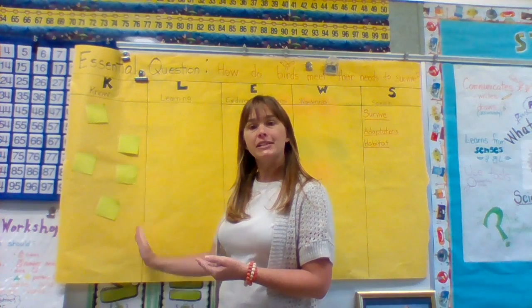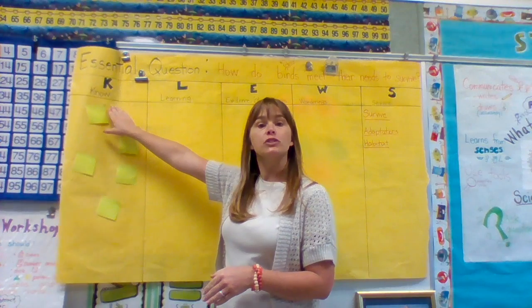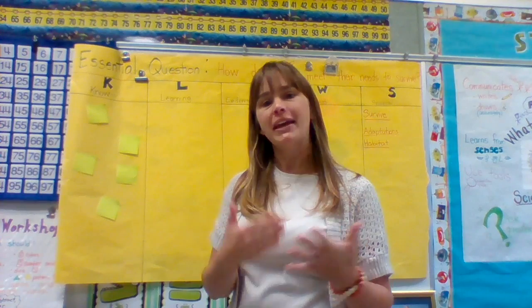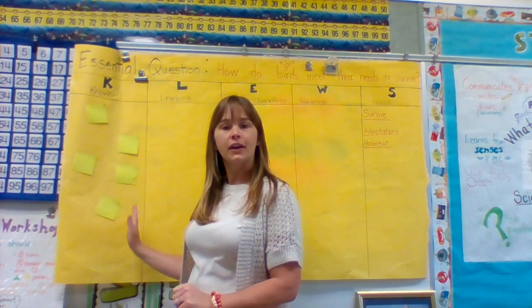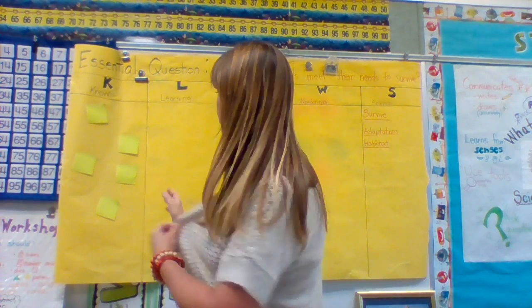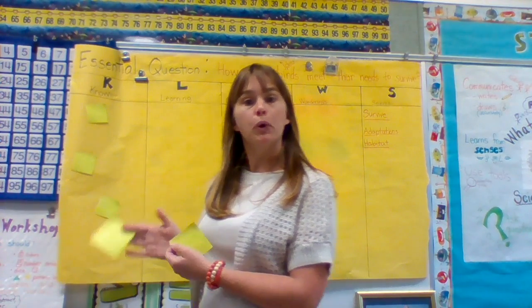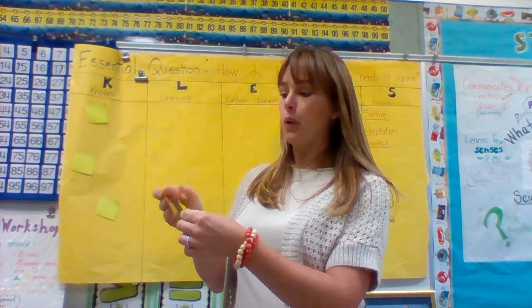The first column is the K in your Clues Chart — just like a KWL. This is for what students already know. At the beginning of the unit, I would pose a question like, what makes birds special? Students would put their post-it notes right up onto the Clues Chart, so we've got evidence of student learning here. Two students both knew that birds build nests, so I'm going to put those post-it notes together because they show the same thinking and knowledge about birds.